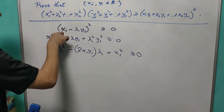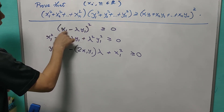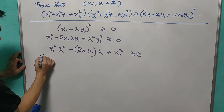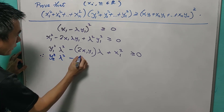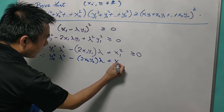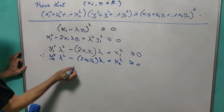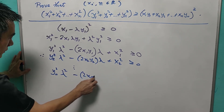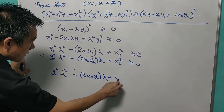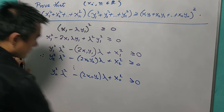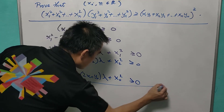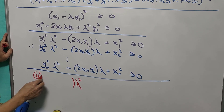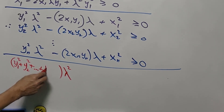Meaning that we can go from the pair x1, y1 up through x2, y2, all the way to xn, yn. Similarly, we have y2²·λ² − 2x2y2·λ + x2² ≥ 0, and we proceed until yn²·λ² − 2xn·yn·λ + xn² ≥ 0. The coefficient of λ² will be y1², y2², all the way to yn².